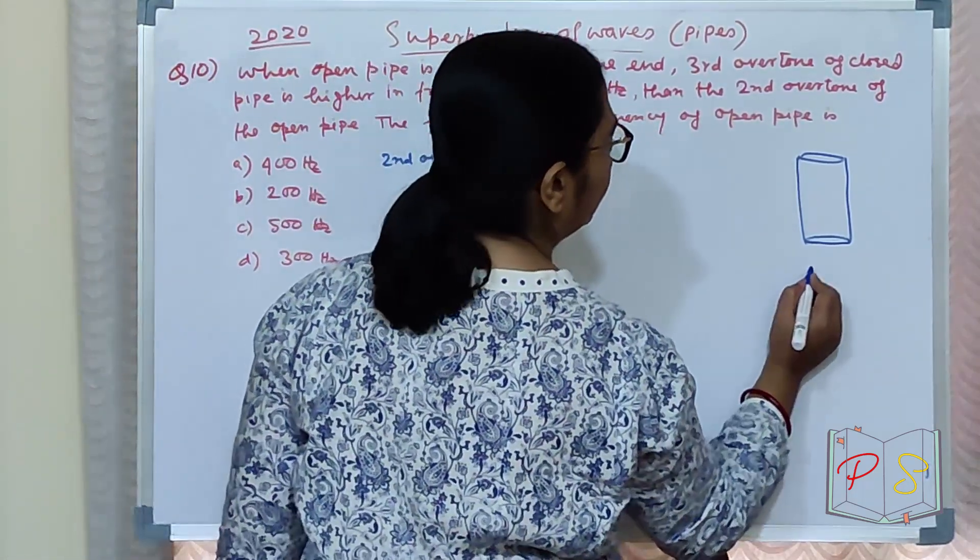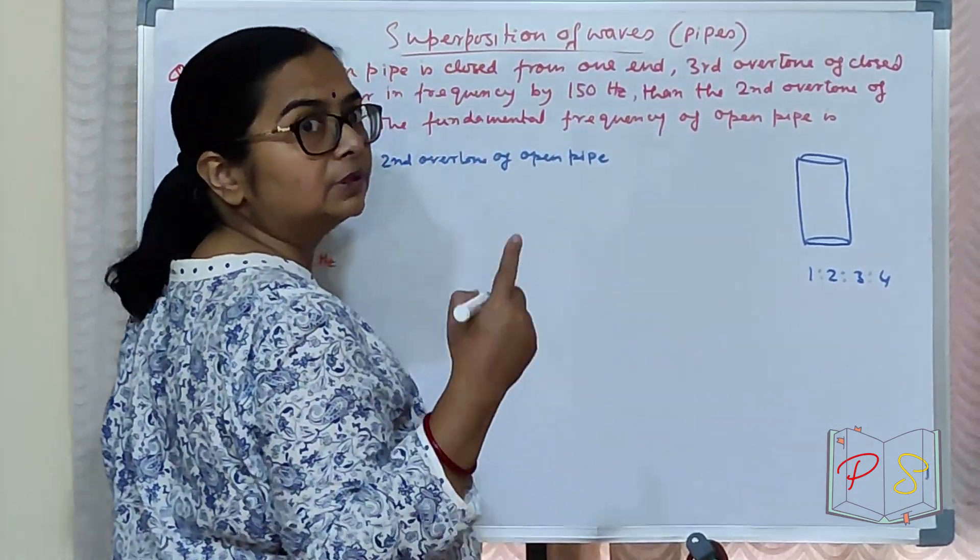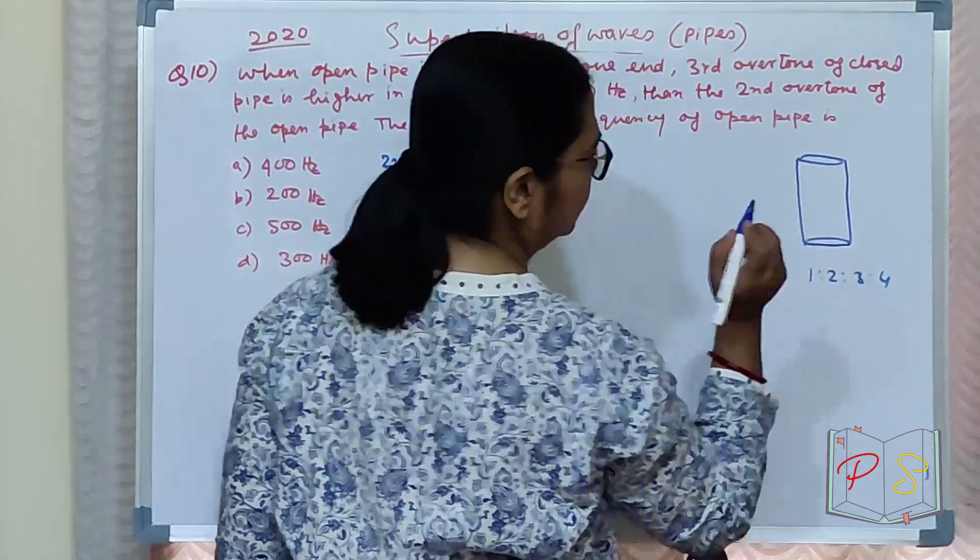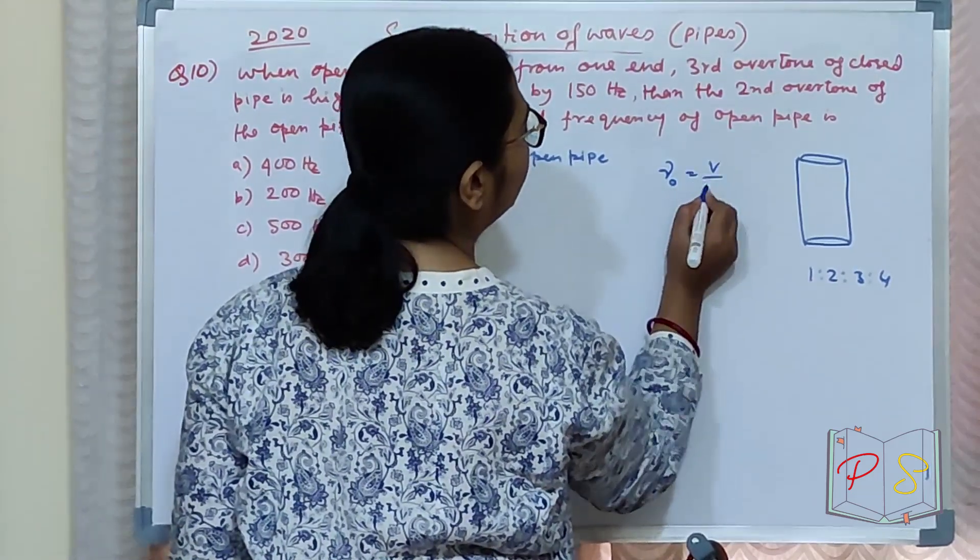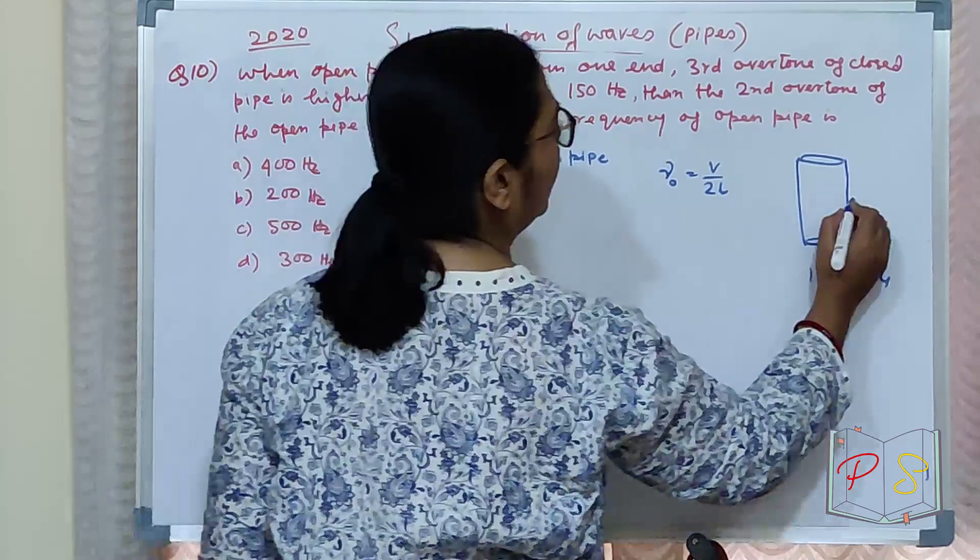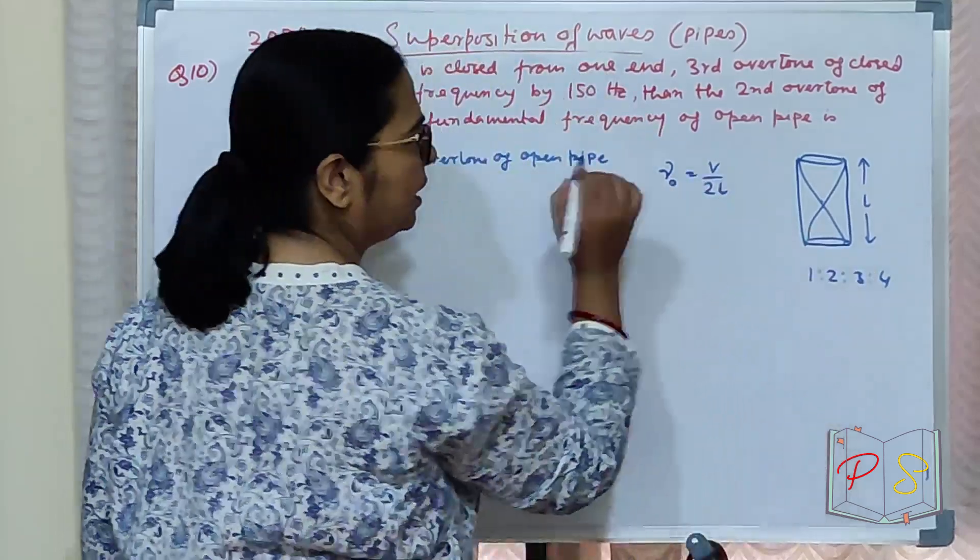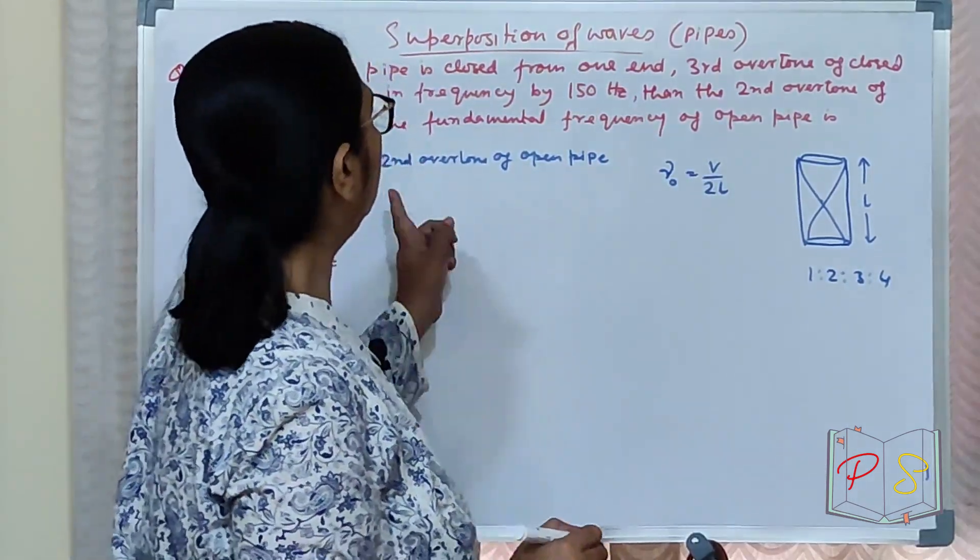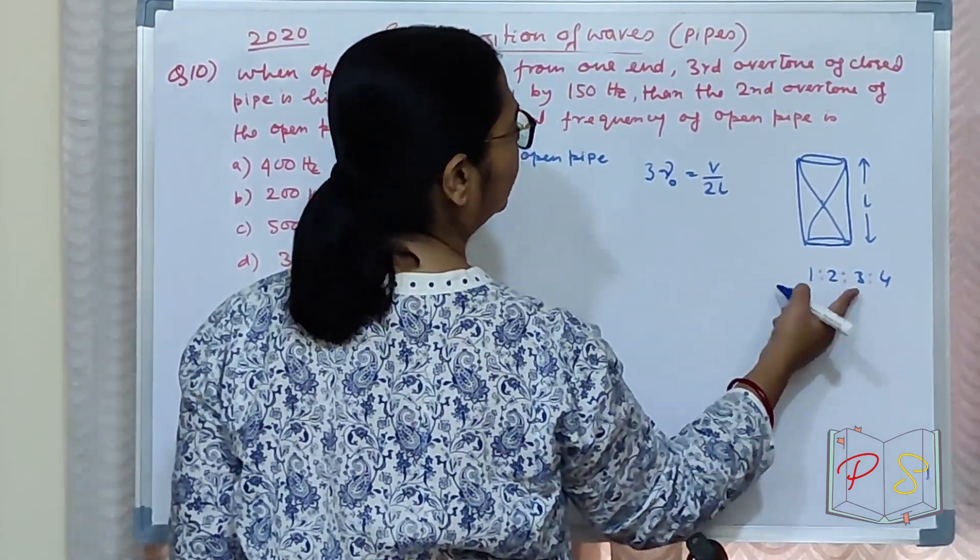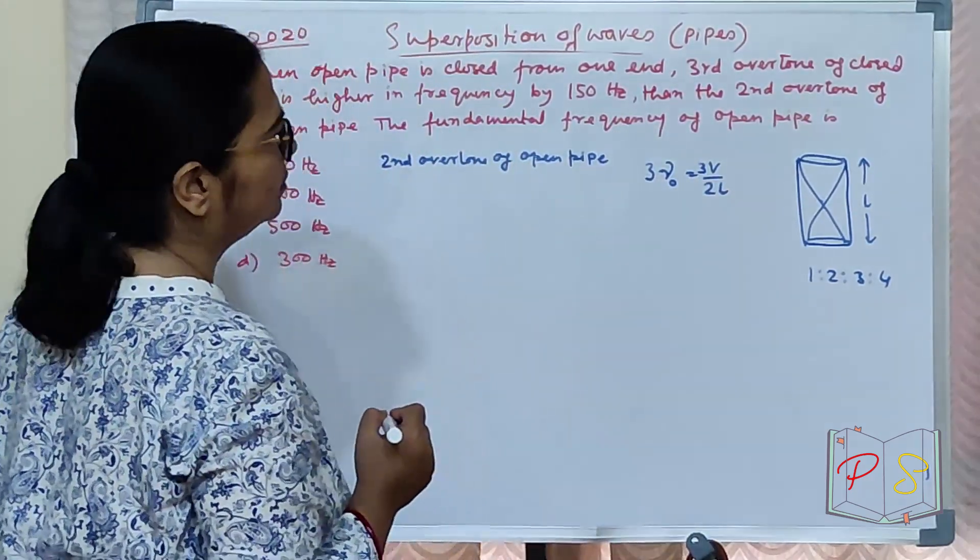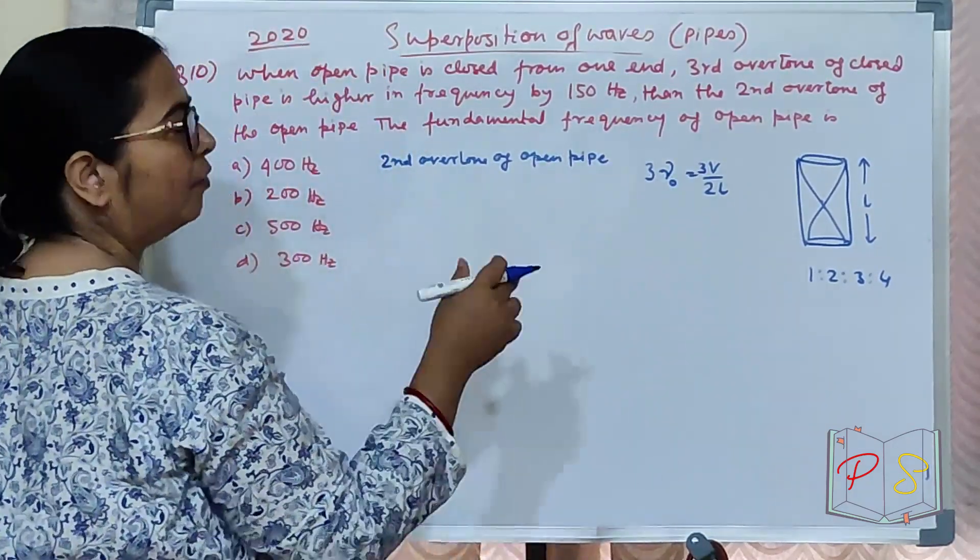Second overtone means the ratio goes 1:2:3:4. Second overtone equals third harmonic. What is the fundamental? The fundamental frequency is V/2L, where L is the length. Second overtone is 3 times this, so 3V/2L. This is the second overtone of open pipe.